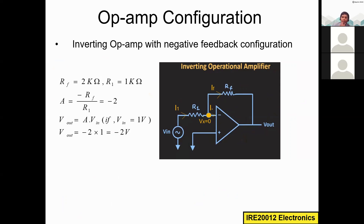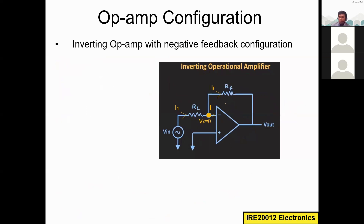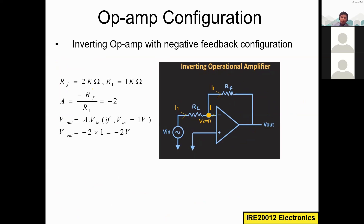Now we will apply some numbers to understand better. Remember the gain formula for this inverting op-amp configuration with negative feedback: A equals minus Rf over R1. I construct a circuit using Rf equals 2 kilohms and R1 equals 1 kilohm. Now I calculate the gain: A equals minus Rf over R1 equals minus 2 over 1 equals minus 2.